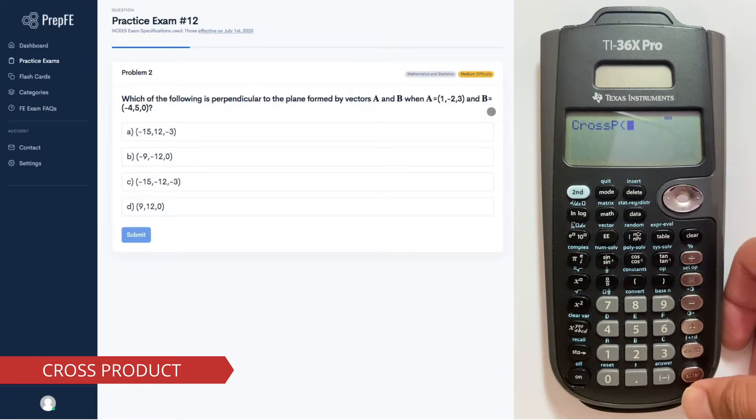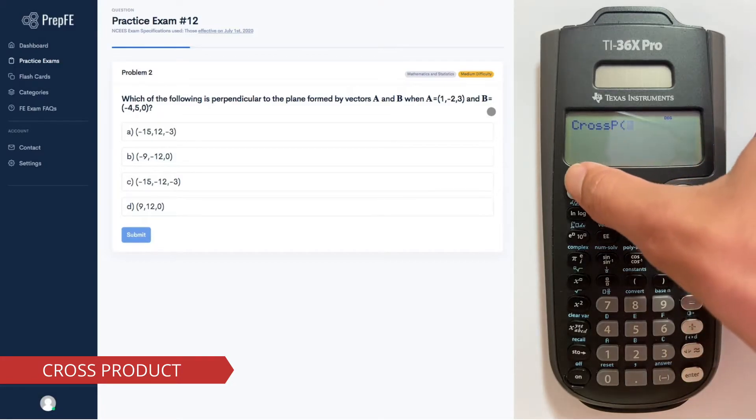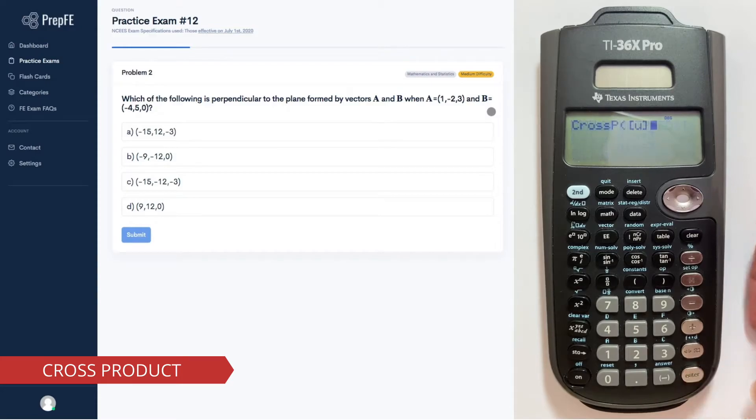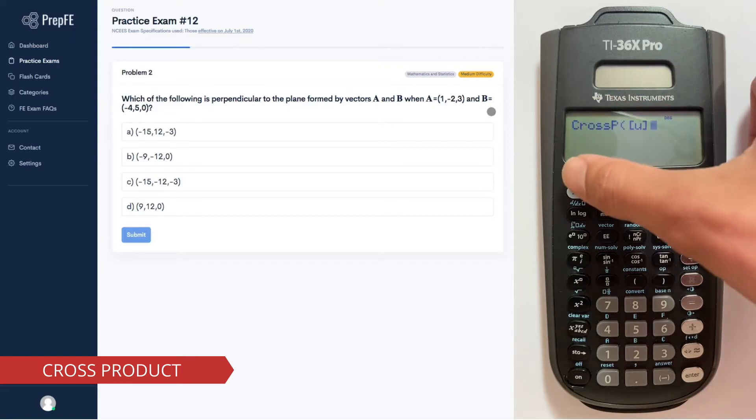Now call back the vectors that we just created. Go to Second, Vector, select the first vector, Enter. Before we can input the second vector, we need to put a comma. To put a comma, go to Second, Comma.